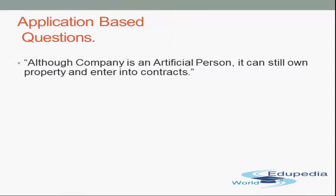The first model sample question is: although a company is an artificial person, it can still own property and enter into contracts. You need to defend or refute the statement. You can see there are two aspects in this question: first, company is an artificial person; second, it can still own property and enter into contracts. You have to go back to the joint stock company definitions and features — you will find the answer there.